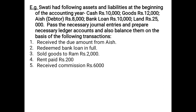The next transaction: sold goods to RAM. Since the word 'cash' is not given, we assume it is a credit sale, so the entry is: RAM debited, To Sales 2,000. Then rent paid: Rent Account debited, To Cash Account 200. Received commission: Cash Account debited, To Commission Account 6,000.